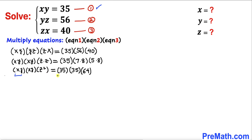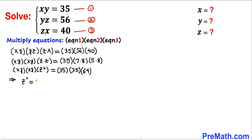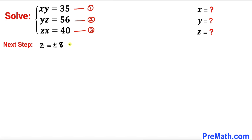From equation 1 we know xy equals 35, and this xy squared factor is also 35 squared, which means z² must equal 64. So we can write z² equals 64. Taking the square root on both sides, z turns out to be positive or negative 8. We will now consider two cases: case 1 when z equals 8, and case 2 when z equals negative 8.